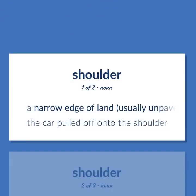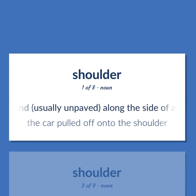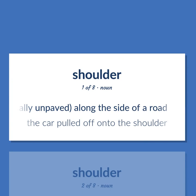A narrow edge of land, usually unpaved, along the side of a road. The car pulled off onto the shoulder.